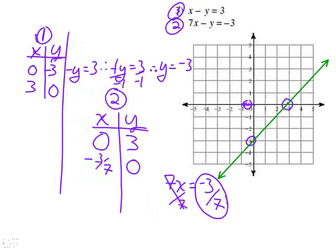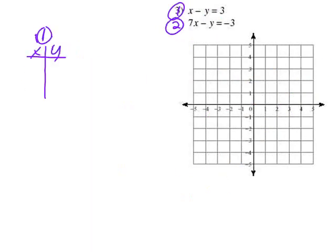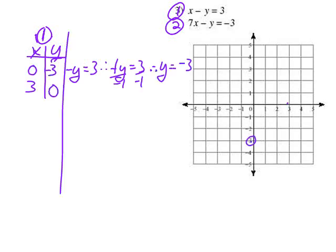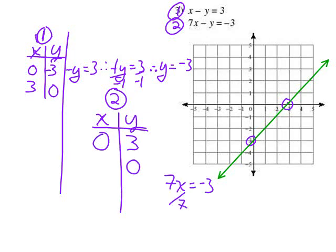Now we have lines in the general form, not slope-intercept form. Using a table with x equals 0 and y equals 0 makes life easy — multiplying by zero is pretty slick. There appears to be a missing slide here — the software failed — but we'll carry on.